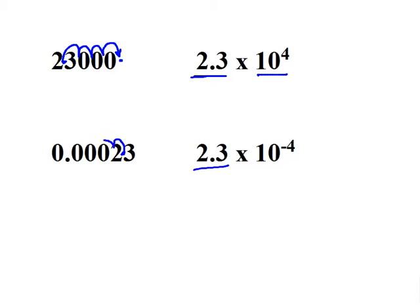...1, 2, 3, 4 times again, but this time in the left direction. And so it's going to be 2.3 times 10 to the power of negative 4. One thing to note here is that whenever we're dealing with numbers greater than 1, the index will always be positive, and when we're dealing with numbers smaller than 1, the index will always be negative.